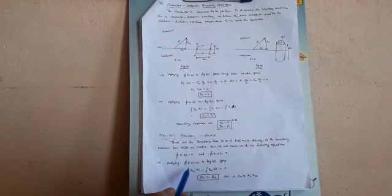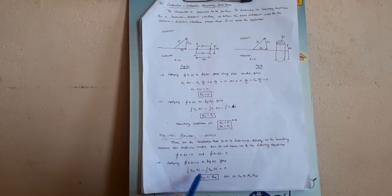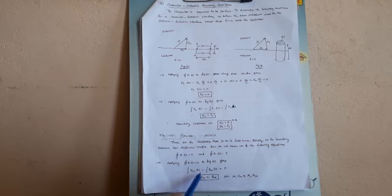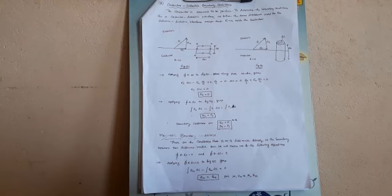Applying the closed integral B dot dS is equal to 0 to Figure A gives: integration B1n delta S minus integration B2n delta S is equal to 0. Therefore B1n is equal to B2n, or mu1 H1n is equal to mu2 H2n.